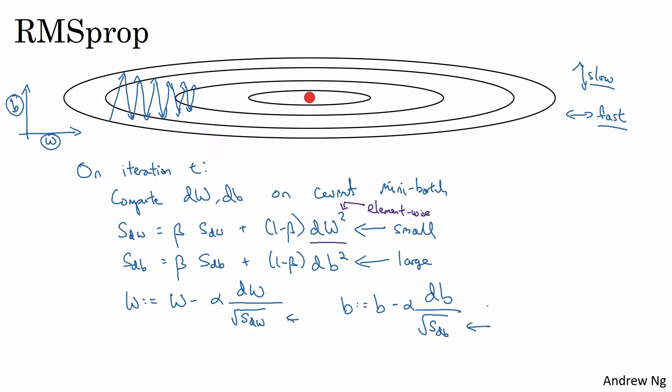And indeed, if you look at the derivatives, these derivatives are much larger in the vertical direction than in the horizontal direction. So the slope is very large in the b direction.